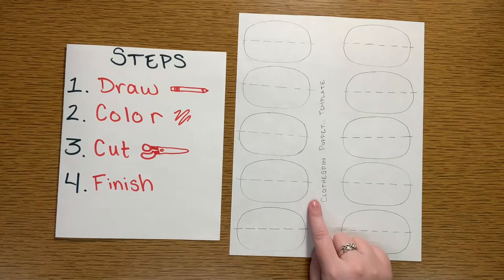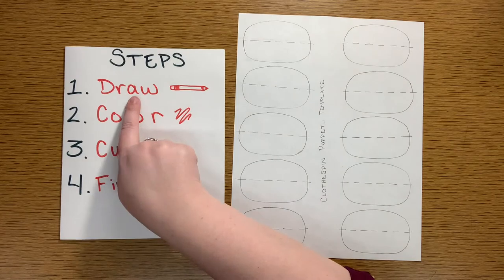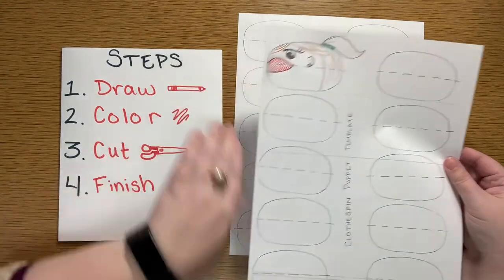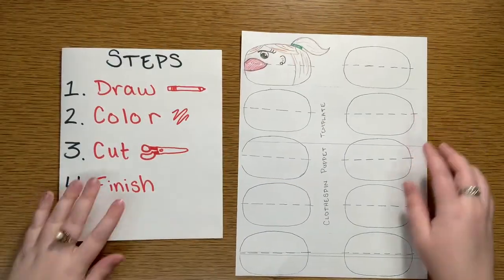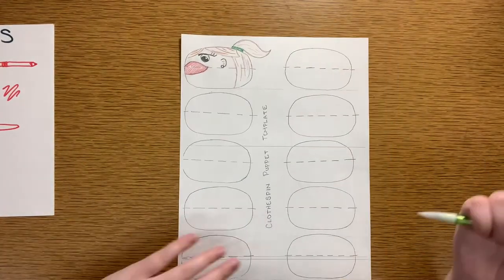So, this is my blank template, and our first step is to draw on the activity. I've got one example here. I'm going to draw another one here for you right now. We're going to make a face.